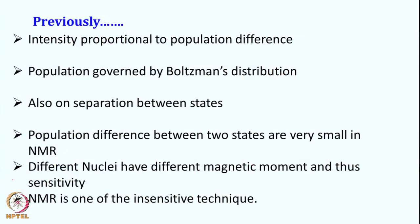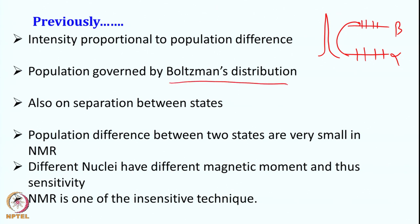We will revise some of the concepts we had seen earlier. Previously, when we started the course, we had seen that the intensity of a resonance is proportional to the population difference between two states. Suppose we have an alpha state and a beta state — how much population is here and how much is here. This difference actually gives you what the intensity of your signal will be. As we have seen, this population is governed by Boltzmann distribution, which dictates how many spins are going to be in the lower state and how many spins are going to be in the higher state.